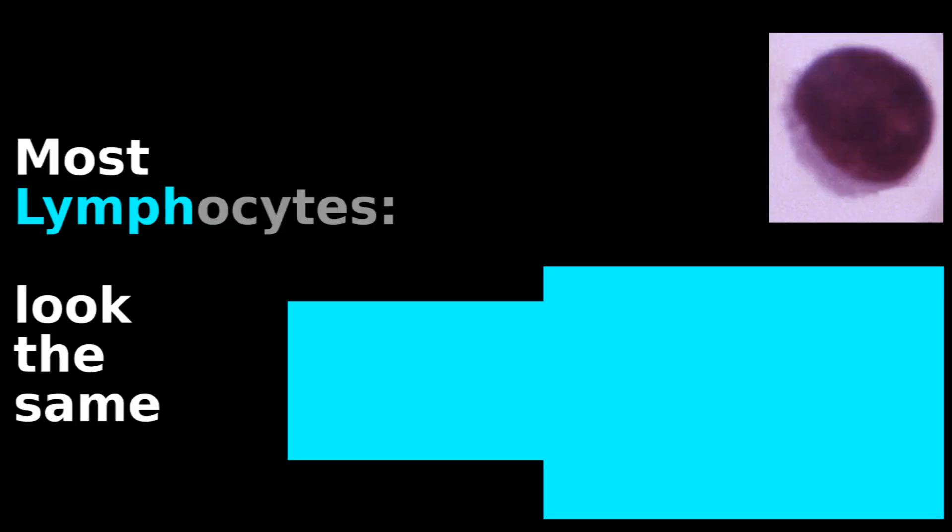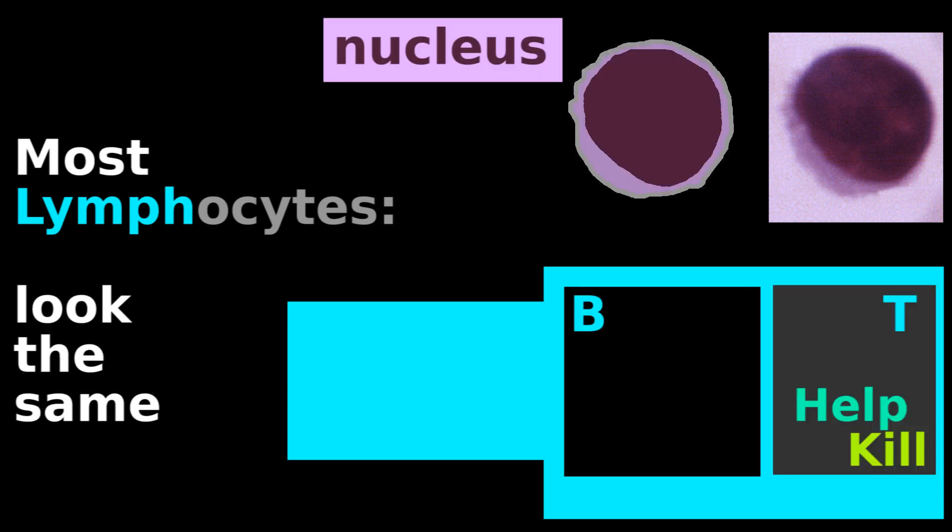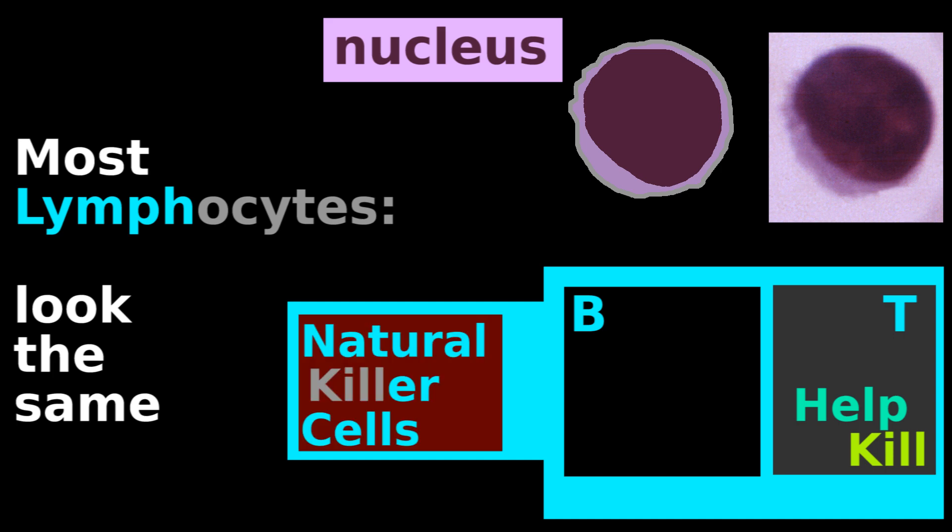This is the histology for lymphocytes, a big nucleus that takes up most of the cell, which can be identified as either B or T cells or natural killer cells.